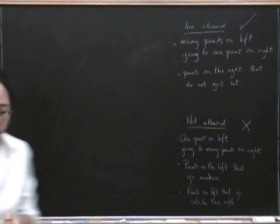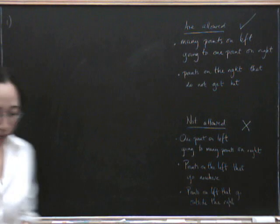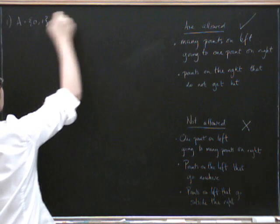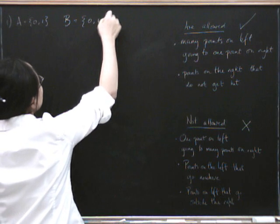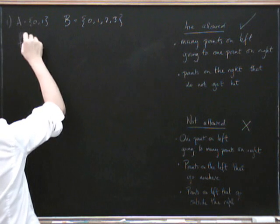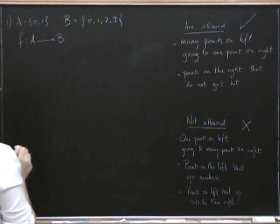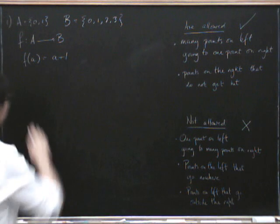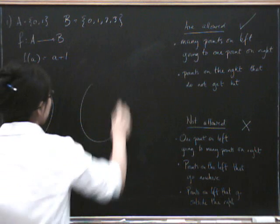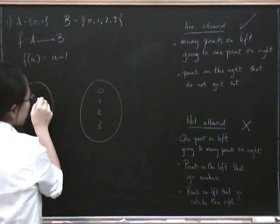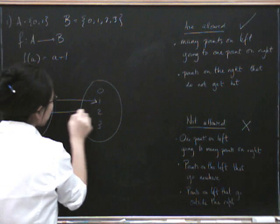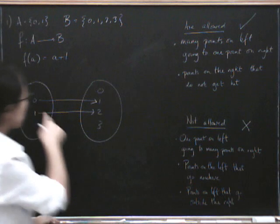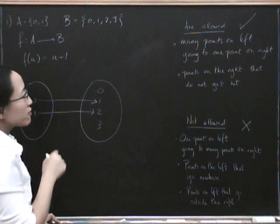Let's have a look at some examples. The first example: we have the set A being {0, 1} and B being {0, 1, 2, 3}, and we have a function going from A to B given by f(a) = a + 1. We can draw this - here's 0 and 1 on the left, here's 0, 1, 2, and 3 on the right. Now 0 goes to 1 and 1 goes to 2. Are there many points on the left going to one point on the right? No, because both points go to completely different places.